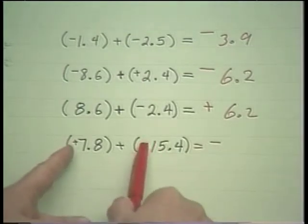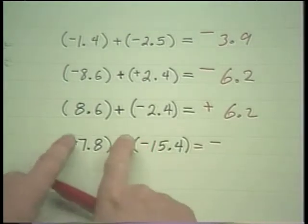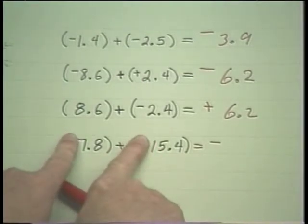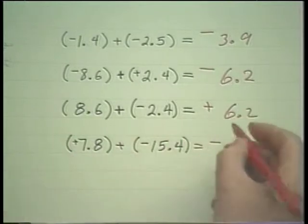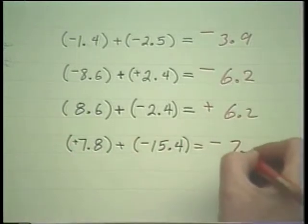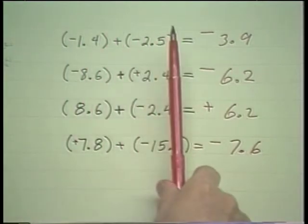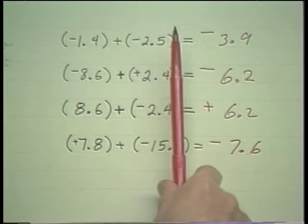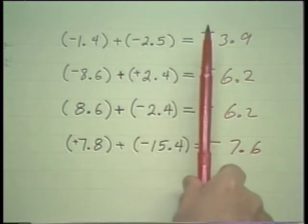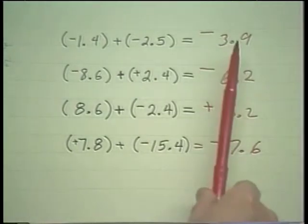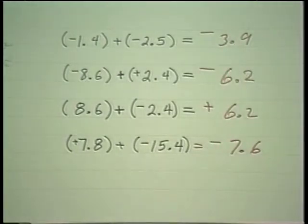If you have different signs, you will take the difference of absolute values, which is 7.6. The algebraic part of this whole process is in determining the sign. From then on, it's just arithmetic that we've lived with all of our lives.